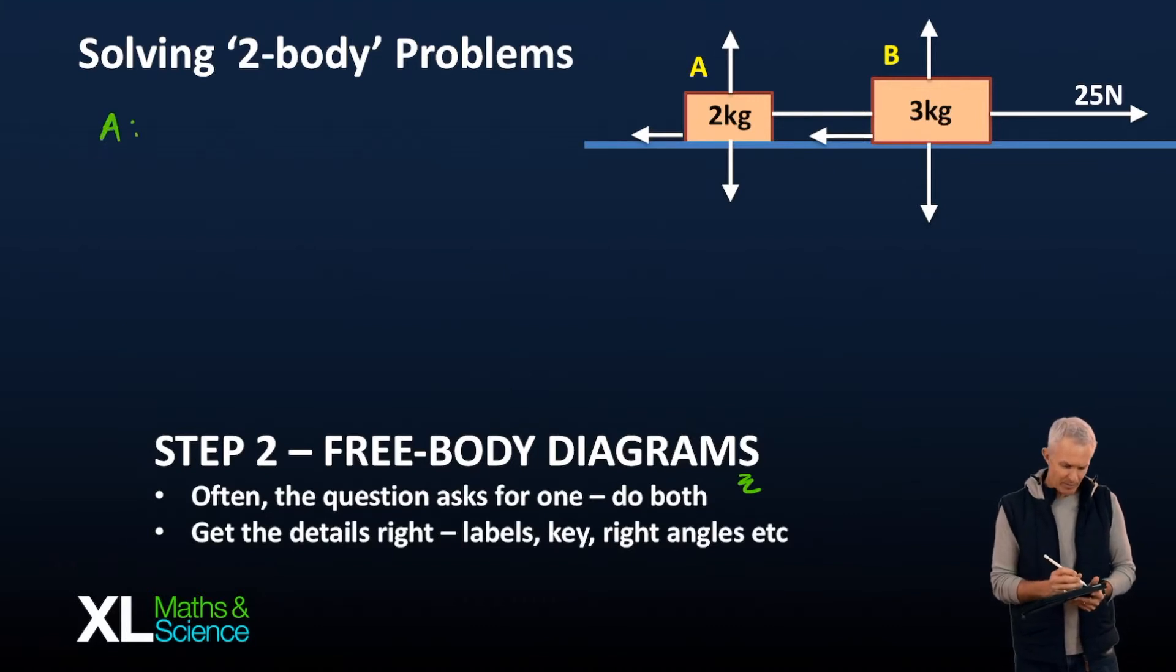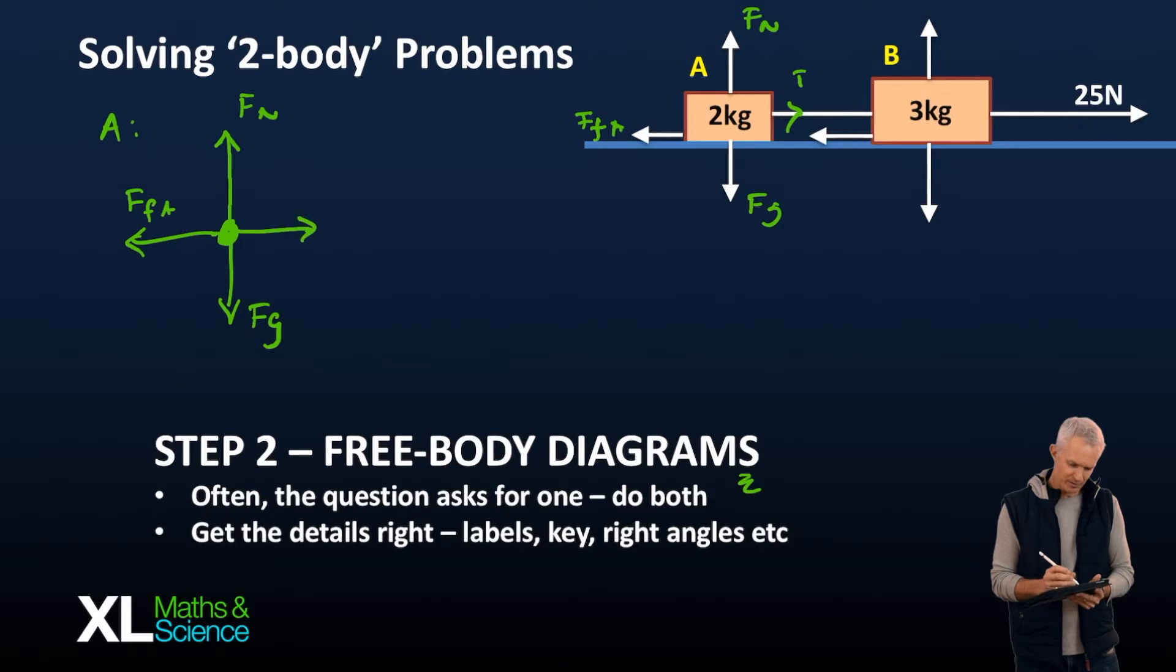Let's give it a whirl. So object A, I always draw a reasonably sized dot. We got our normal that we said was acting upwards. Then we got our gravity that was acting downwards, same size as the normal. Then we got our friction that was acting to the left, FFA. And we got our tension to the right. I'm not sure how those compare so that's just fine like that.